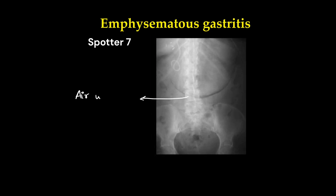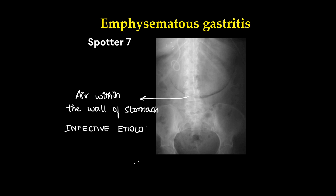This was emphysematous gastritis. Here we can see air foci within the wall of the stomach, in the shape of the greater curvature of the stomach. This happens because of infection by anaerobic microbes.